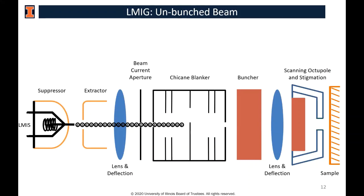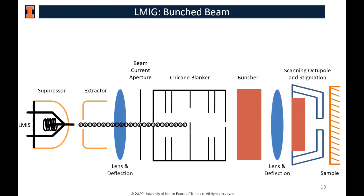Not all ions arrive at the sample at the same time, which reduces mass resolution since secondary ions won't all be created simultaneously. The buncher addresses this by accelerating the last ions through the chicane blanker relative to the first ones. When optimized, all ions arrive at the sample at the same time. However, bunching can increase the beam spot size, so unbunched beams are still used when the highest spatial resolution is desired.